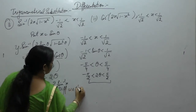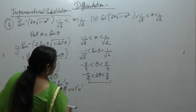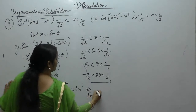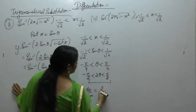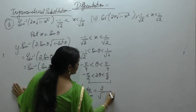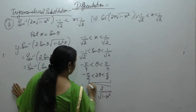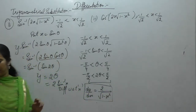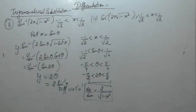Now differentiate with respect to x. What we get: dy upon dx equals the derivative of 2 sine inverse x, which is 2 upon square root of 1 minus x squared. Note it down.